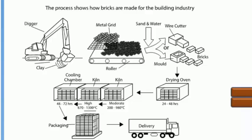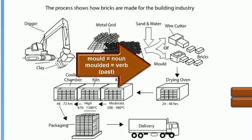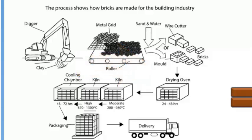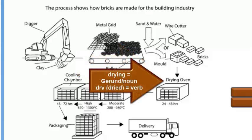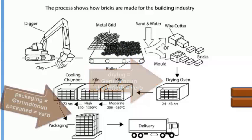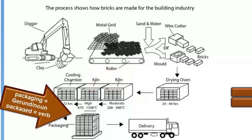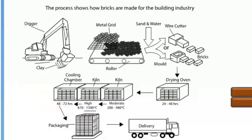Sometimes we can use the noun to give us a clue for the verb. So for example, with the word 'mould' there, we could say the bricks are moulded. In the drying oven, we could use that verb — we could say 'dry'. And 'packaging' we can make into a verb by using 'package'. But sometimes you're going to need other verbs as well.